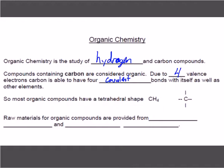Those bonds could include double and triple bonds. It can share four different sets of electrons. Most organic compounds have a tetrahedral shape. It's got that four.